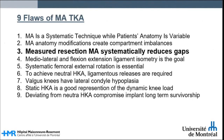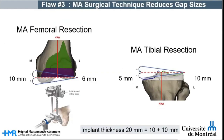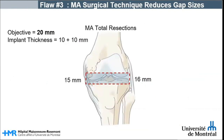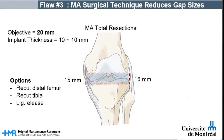Third, measured resection mechanical alignment systematically reduces gaps. Using an example with a neutral hip-knee angle, the distal femoral and proximal tibial cuts are perpendicular to the mechanical axis. The resection depth is set at 10 mm from the most distal femoral condyle — the medial side — and from the most proximal tibial plateau on the lateral side. It is evident that total gap thickness created will be insufficient both medially and laterally. When tightness is present in both compartments, it may be corrected by bone re-cut, with the disadvantage of modifying the joint line level. But when tightness is asymmetric, ligament release is necessary.